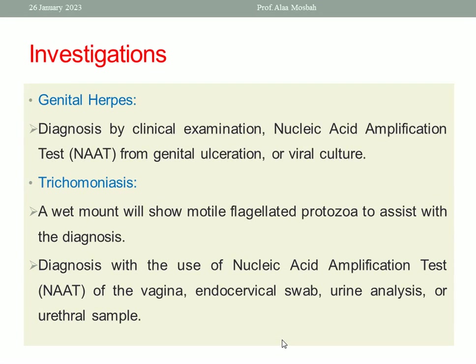For genital herpes, diagnosis is by clinical examination and NAAT from a genital ulceration sample or viral culture. For trichomoniasis, a wet mount will show motile flagellated protozoa. NAAT can also be used on vaginal swab, endocervical swab, urine analysis, or urethral sample.